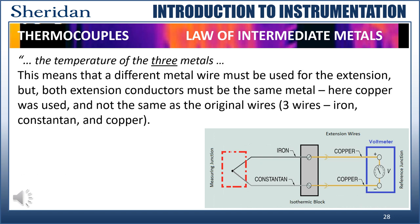The second part mentions three metals. Since the measuring junction is made of two dissimilar metals, then the extension junction wires must be the same conductor metal. In our example, the three metals are iron, constantan, and the measuring junction, and copper used for the extension wires.